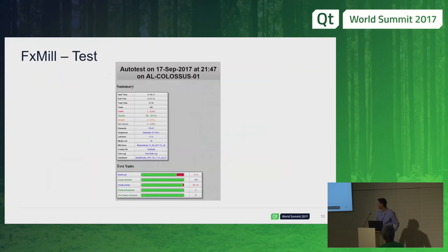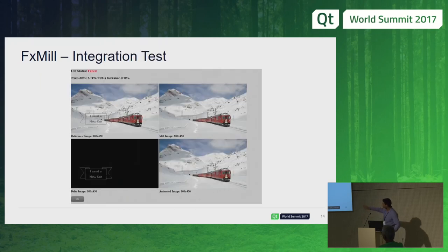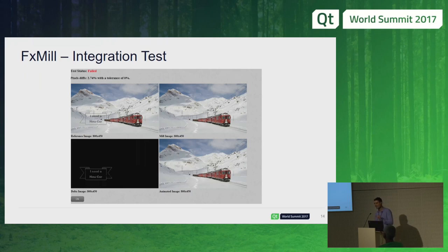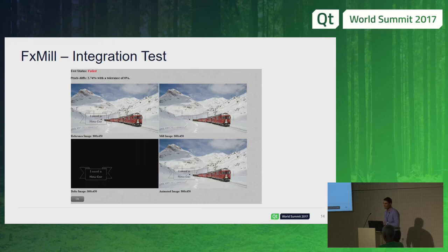The tests are simple, but here you can see the reference image alongside the image that FX Mill generated, and you can see that something is wrong. In this case it's obvious, but it works even for subtle differences. The key concept is that if you always test on the same computer, the images generated are always identical. If you move to a different graphics card, you have to recreate your reference images, but as long as you stay on the same machine, everything is consistent.